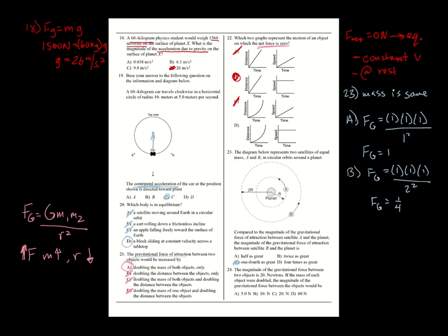Number twenty-four: the original gravitational force is 20 newtons. If both masses are doubled, using dummy variables with each mass becoming 2, the new force is four times as great. Four times 20 newtons equals 80 newtons — choice D.